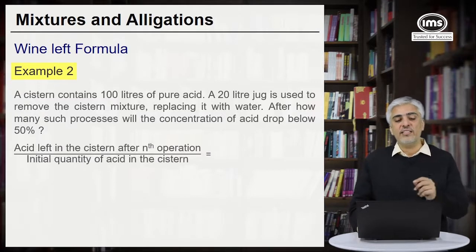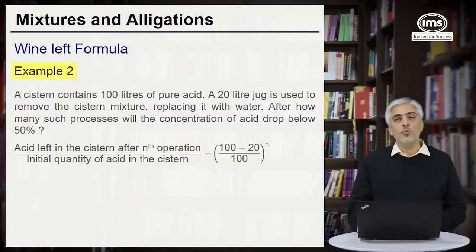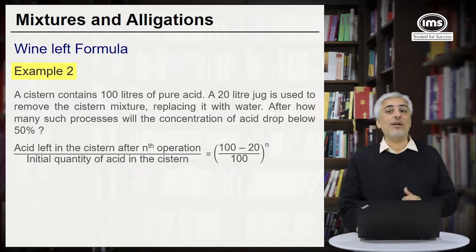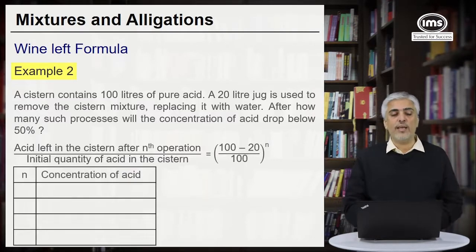Acid left in the cistern after nth operation upon initial quantity of acid in the cistern will be (100 minus 20) upon 100 raised to n. 100 minus 20 we know is 80. 80 upon 100 is 0.8. So it will be 0.8 raised to n.